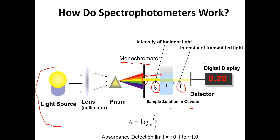The higher the concentration of your sample, the higher the absorption reading. This machine uses the logarithmic Beer-Lambert formula, comparing I versus I0. If there is no absorption, I and I0 will be the same and absorbance will be close to zero. If I is smaller than I0, you have absorption.